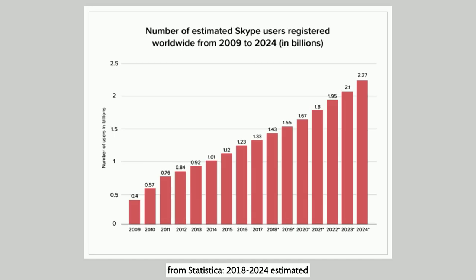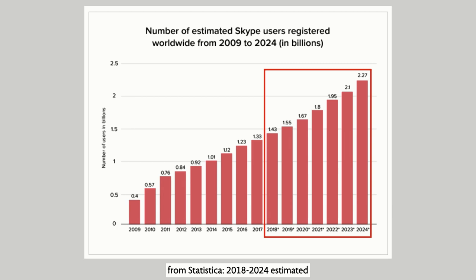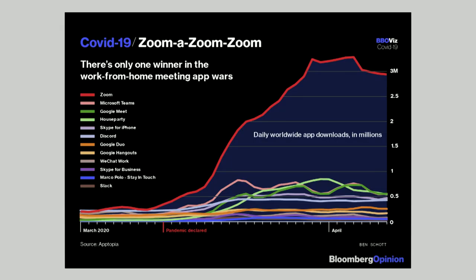Story number four: Zoom. I looked online to find stats about the growth of Skype and Zoom. There was a Statistica projection showing Skype's expected growth from 2018 onwards — but as we all know, that was not Skype's happy story. What actually happened was that Skype and everybody else went nowhere, and Zoom completely exploded — that's Zoom in red — and that happened at the time of COVID.